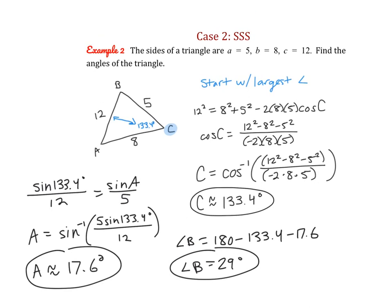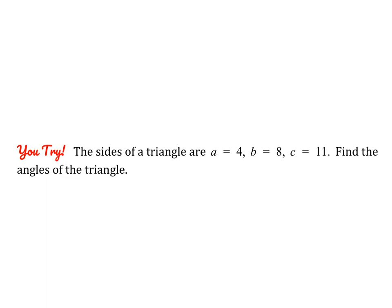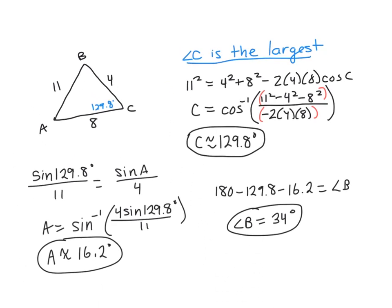The important thing is to start with the largest angle when using law of cosines, because arc cosine is great at giving obtuse answers while arc sine is not. Go ahead and pause and try the next example. Starting with angle C since it's opposite the longest side, angle C is approximately 129.8 degrees using law of cosines. Then using law of sines for the remaining angles, angle A and angle B are found — if you rounded slightly differently, answers may be off by a tenth, which is fine.